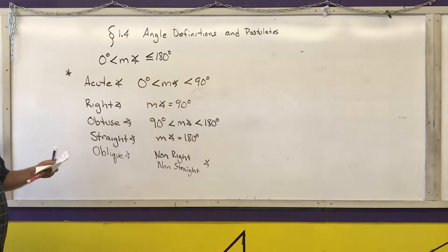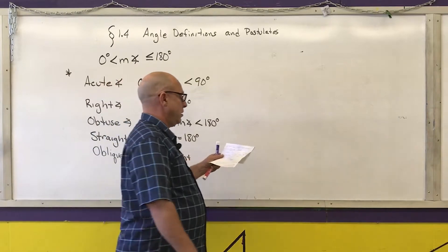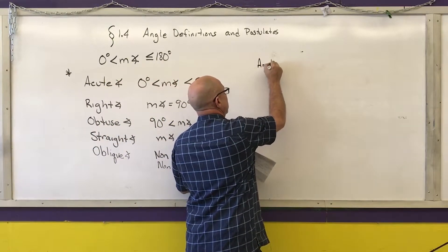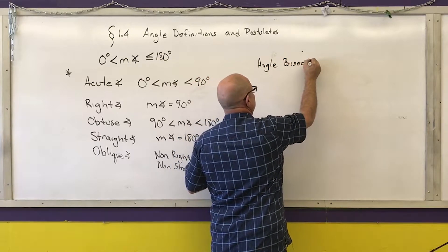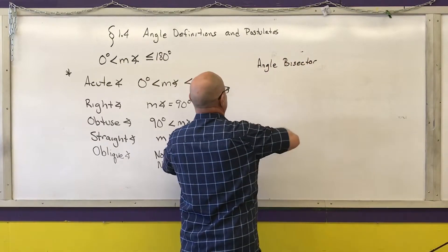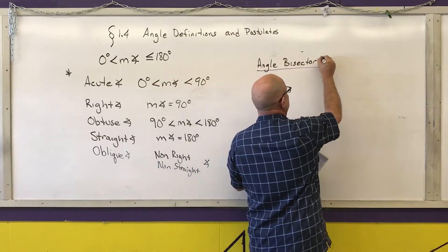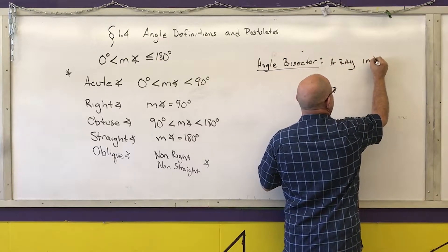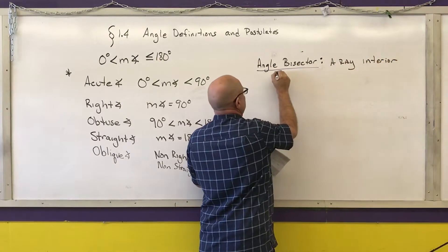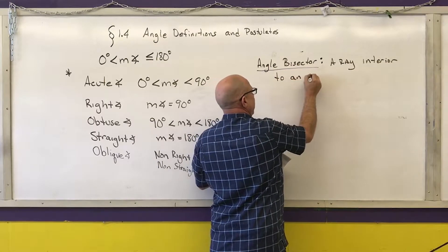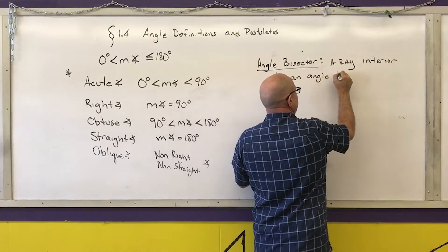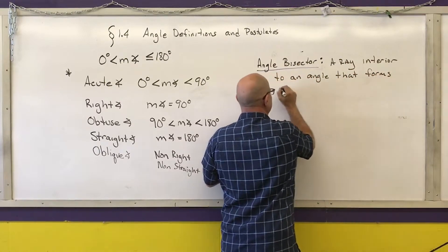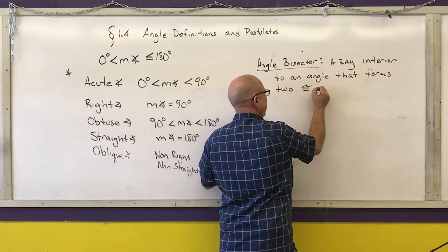Other things that we need to talk about is angle bisectors. An angle bisector is a ray interior to an angle that forms two congruent angles.